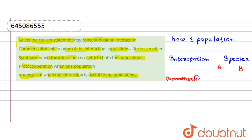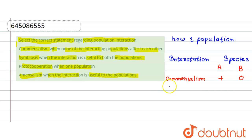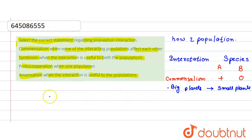First, considering commensalism: in commensalism, one species is benefited but the other species has no benefit nor loss - denoted as plus and zero. For example, big plants nourishing small plants. The small plants get benefit while the big plant is neither benefited nor at a loss. That is commensalism - one is benefited, the other has no benefit and no loss.